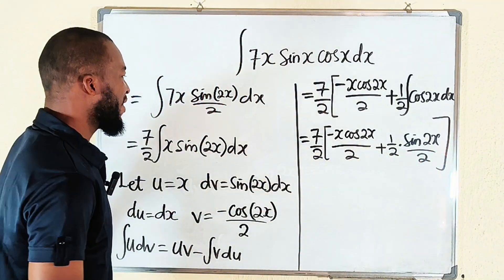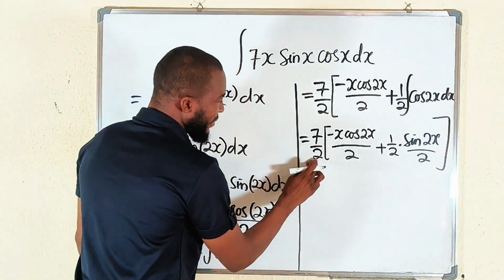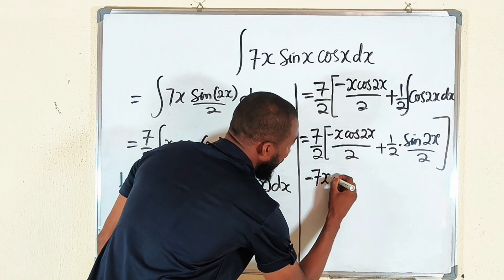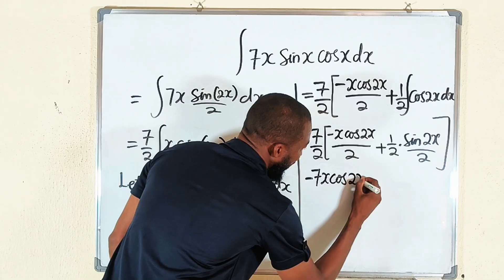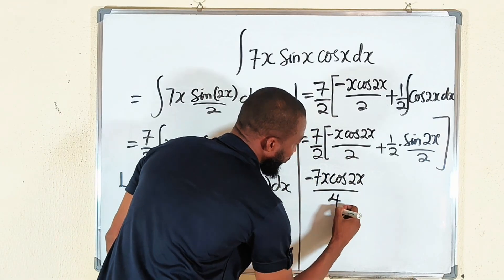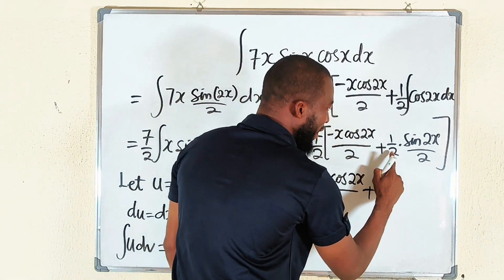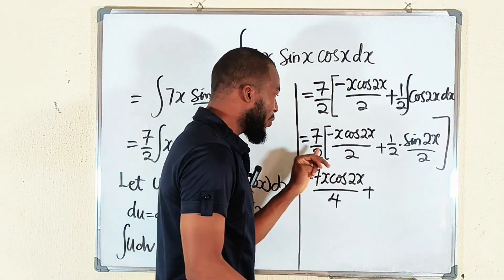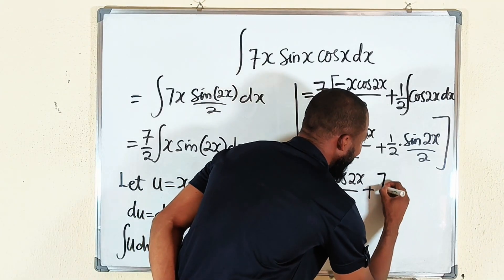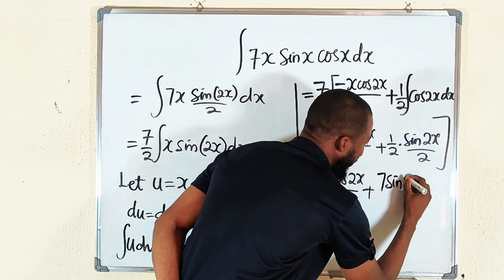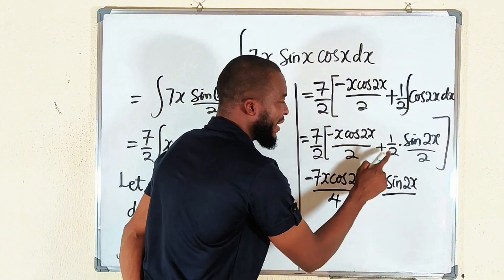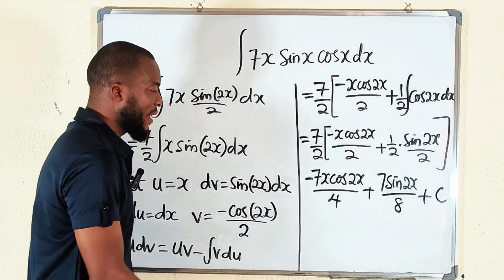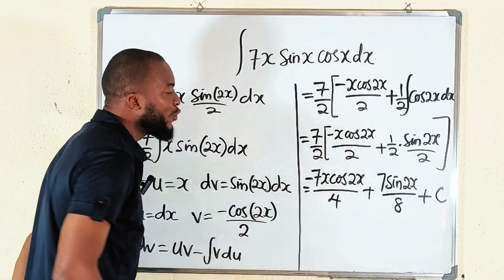Remember we have plus c but let me expand first. This will give us negative 7x cos of 2x divided by 2 times 2 is 4. Plus, this is going to give us 4, right? 2 times 2 is 4. And this one will give us 8 at the bottom but we still have 7. So this is going to be 7 sin of 2x divided by 2 times 2 times 2 which is 8, plus the constant of integration. So this is the solution to this problem.